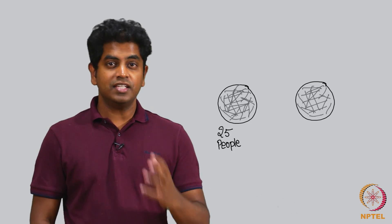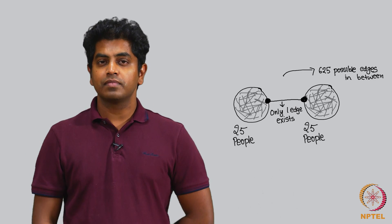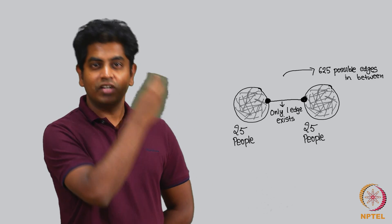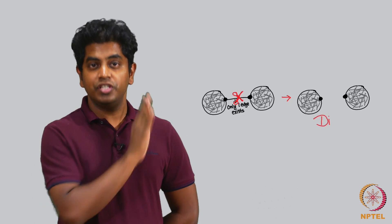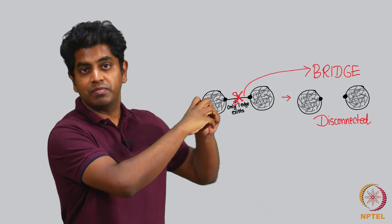Their friendship is not intense. Remember, there are 625 possible friendships and only one friendship is happening — this is rare. Such a structure may not even exist in real life. Such an edge is called a bridge. The definition of a bridge is: you remove that edge and the graph becomes disconnected.